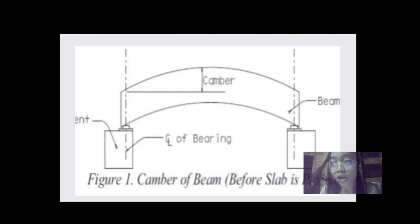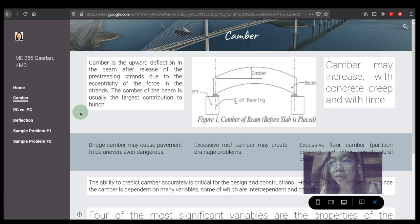The camber of the beam is usually the largest contribution to punch. Camber may increase with concrete creep and with time, and by creep, by ACI definition,